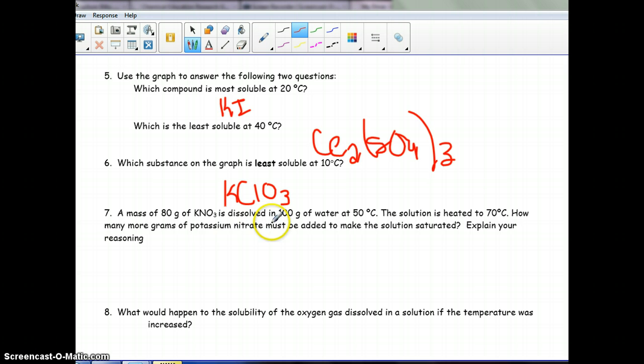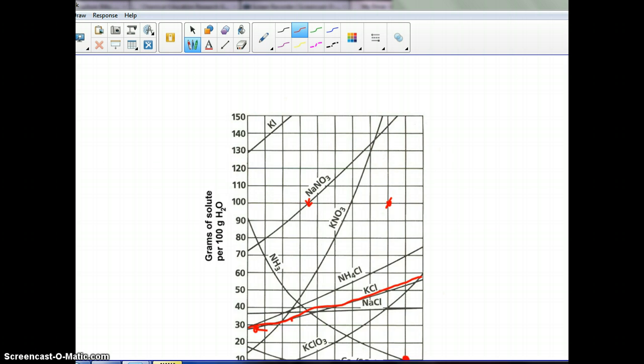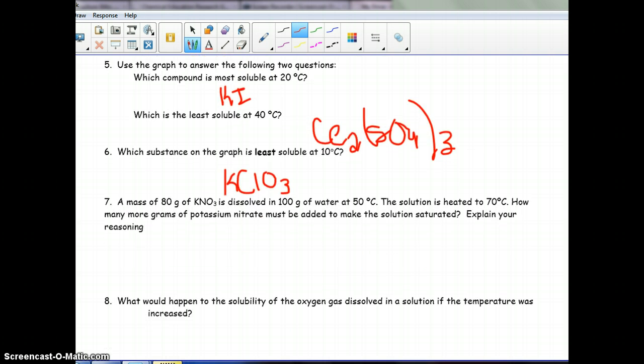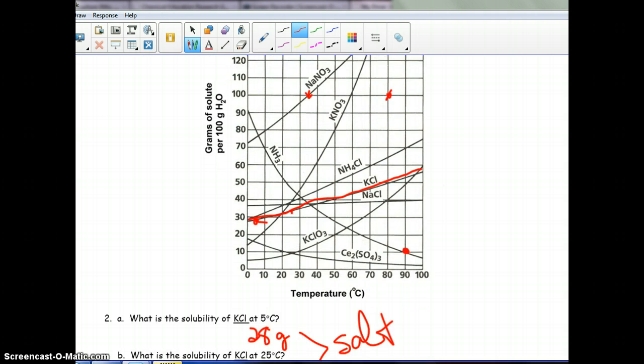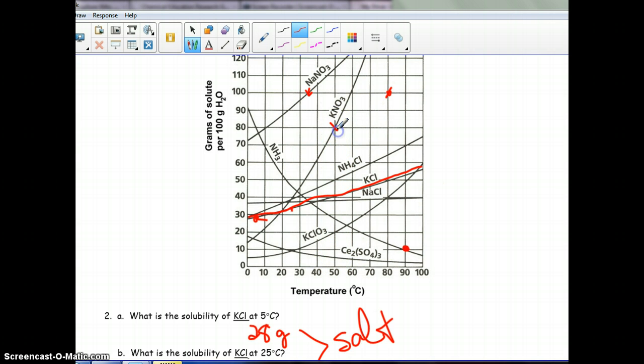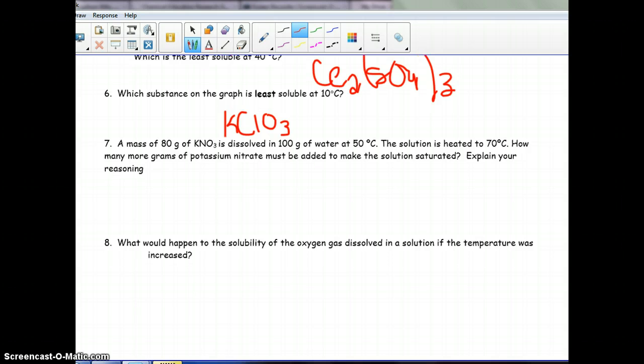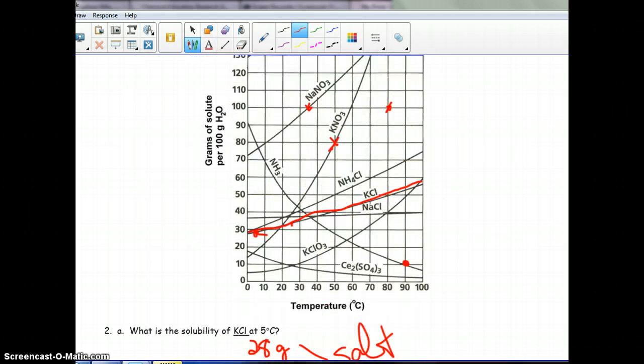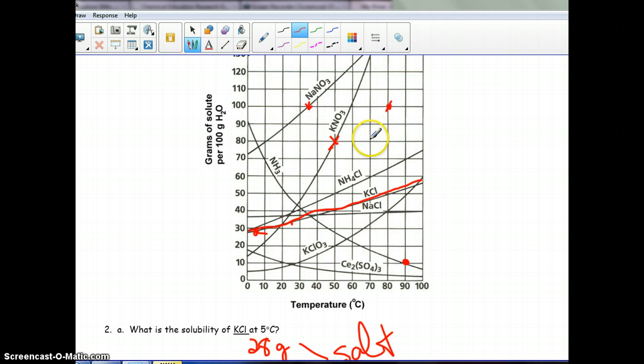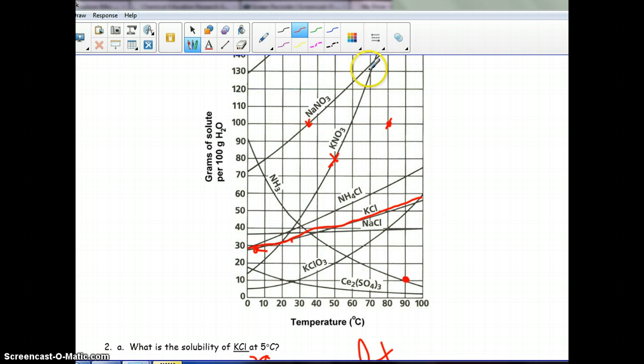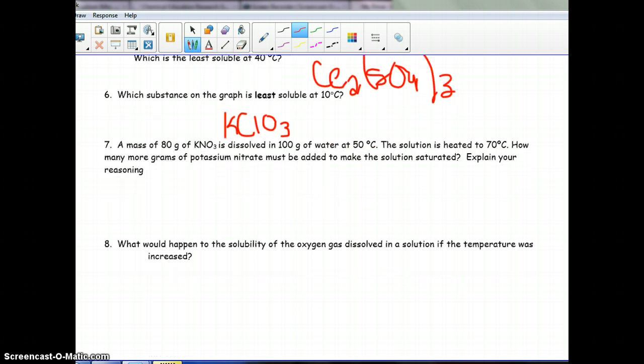Two more questions. We have a mass of 80 grams dissolved at 50 degrees, KNO3. So, KNO3, 50 degrees, 80 grams. So, we're right there. We are exactly saturated. We are on the line. And, then it says, the solution is heated to 70 degrees. How many more grams do you need to be saturated? So, we're going to heat this puppy up to 70 degrees. So, we're going to move over here. And, wants to know how much more we need to be saturated. Well, let's look and see what we need to be saturated at 70 degrees for KNO3. We need 130 grams. Well, the difference between 80 and 130 is going to be 50 more grams. So, we're going to have to add 50 more grams to keep a saturated solution at 70 degrees.